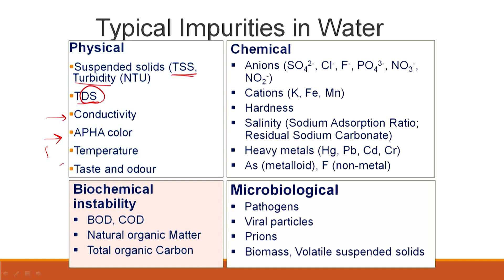Other physical quality indicators include color, temperature, taste, and odor, though those are difficult to define precisely. For chemical impurities, typical examples include sulphates, chlorides, fluorides, phosphates, nitrates, and nitrites, along with some cations. Hardness can lead to issues with drinking water supply and can cause indigestion and gastroenteric troubles.